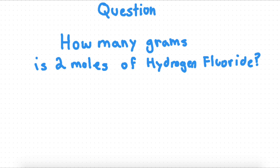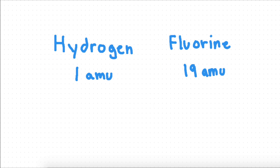Now I have a question for you: how many grams is 2 moles of hydrogen fluoride? Hydrogen is 1 AMU and fluorine is 19 AMU. Try to pause the video and figure it out yourself.